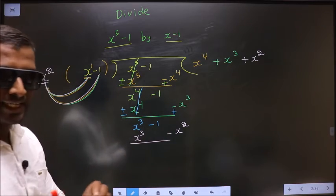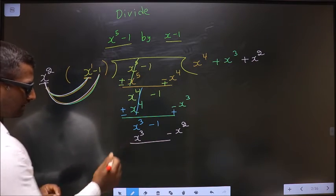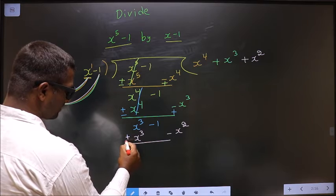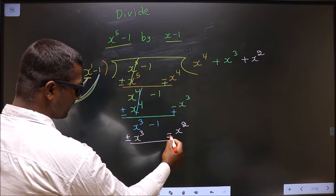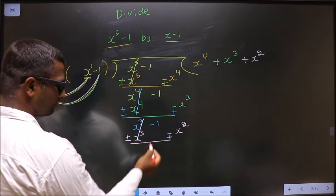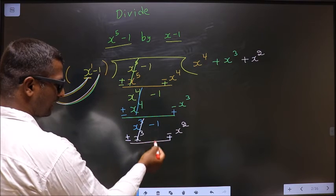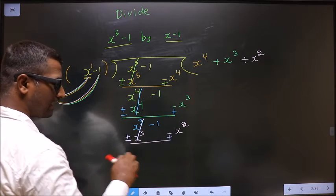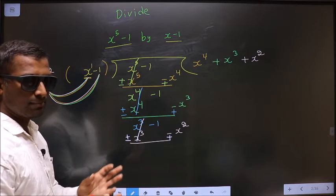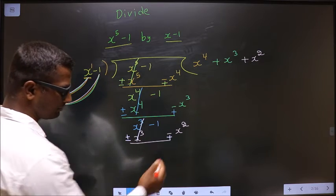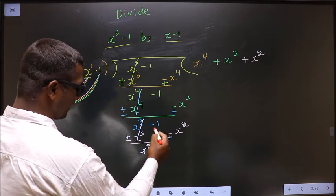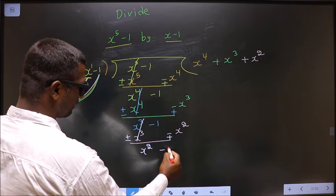Change the signs: here it is plus, make it minus; here it is minus, make it plus. Now this cancels out. Do not write minus 1 first — we write in the decreasing powers of x in whatever remains. So x power 2 first, and minus 1 after that.